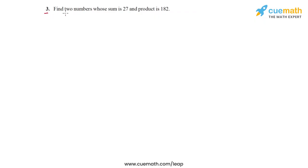In question 3 of this exercise, we have to find two numbers whose sum is 27 and whose product is 182. So let's say that one of the numbers is x. Now because the sum of the numbers is 27, the second number must be 27 minus x.